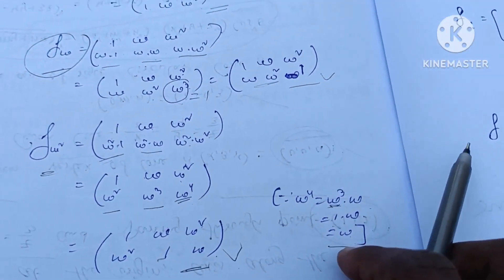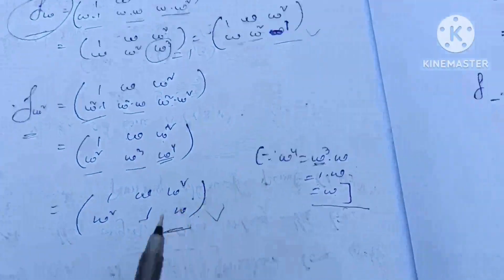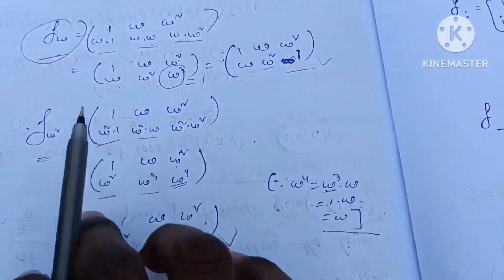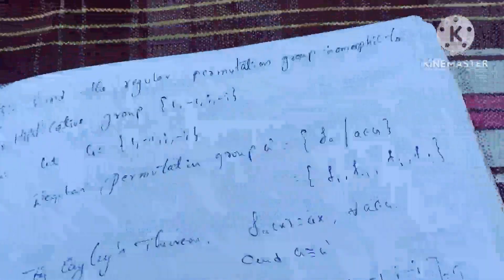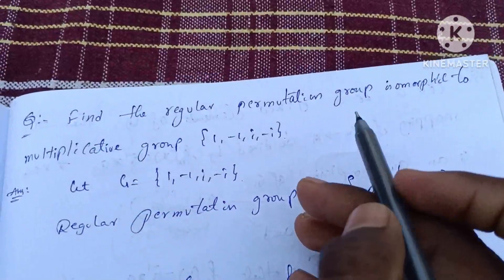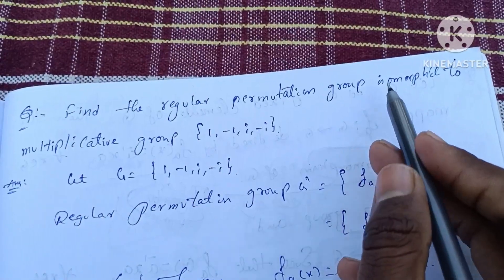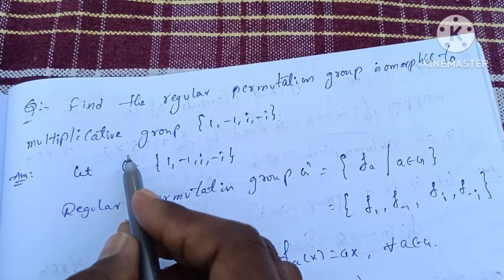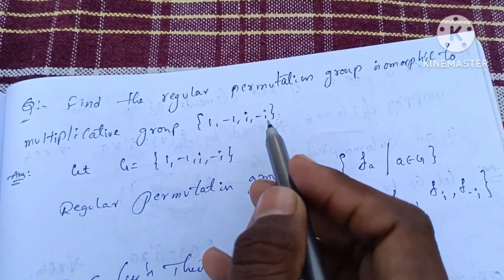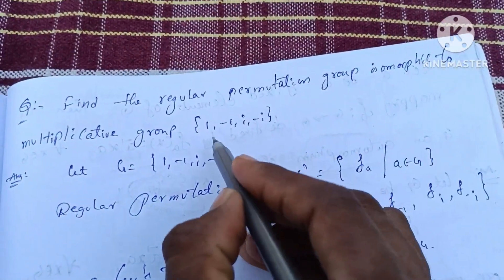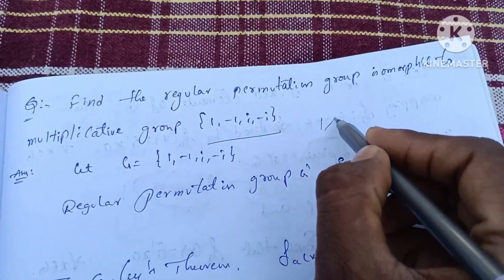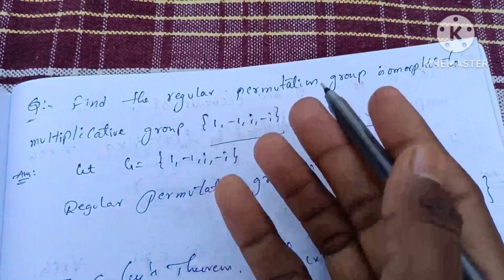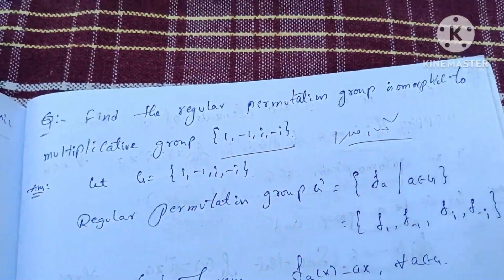So how do we find the regular permutation group? Find the regular permutation group isomorphic to multiplicative group {1, -1, i, -i}. It doesn't mean 1, omega, omega square — it is 1, -1, i, -i.